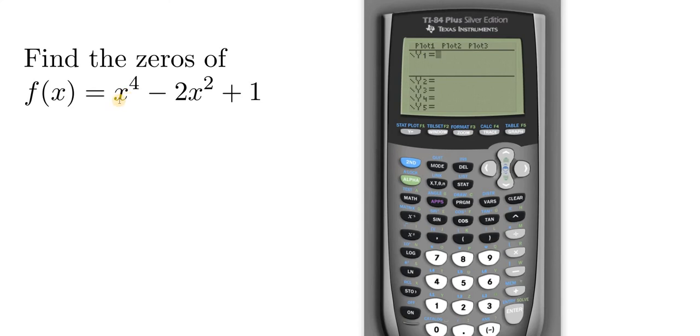Now I'm going to type in the function, so we have x to the fourth. The variable key is here, so x. The exponent key is down here, it's this caret key. So I'm going to click it, then you'll notice it takes us to the exponent.